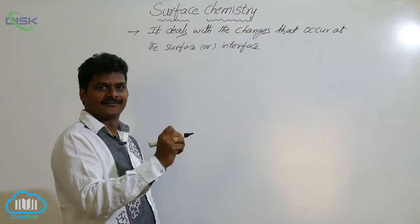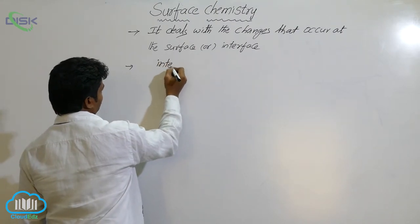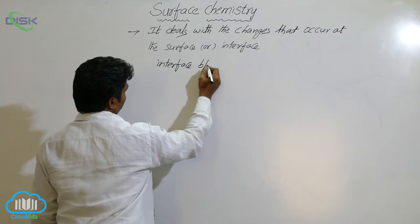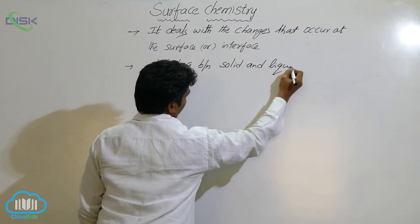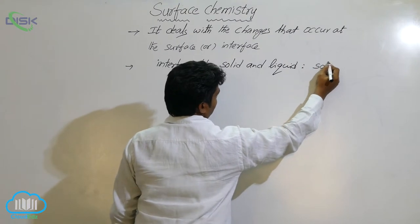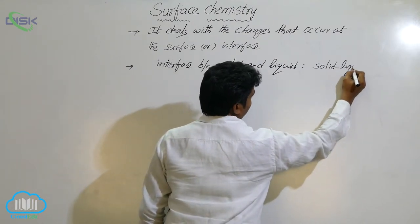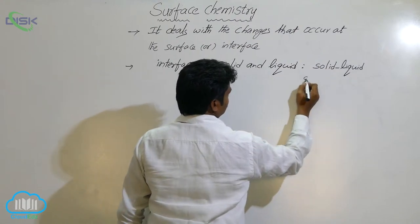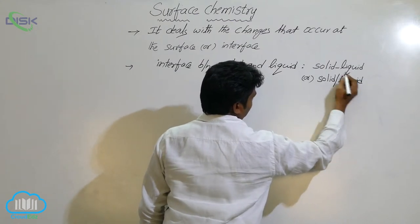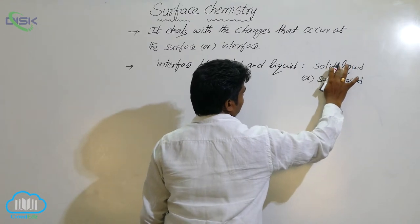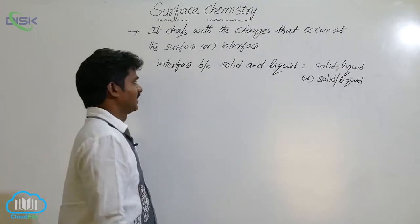The area of contact between two phases is called an interface. Surface or interface is denoted by a hyphen or a slash. For example, the interface between solid and liquid is denoted as solid-liquid or solid/liquid. This hyphen or slash indicates the interface between two phases.